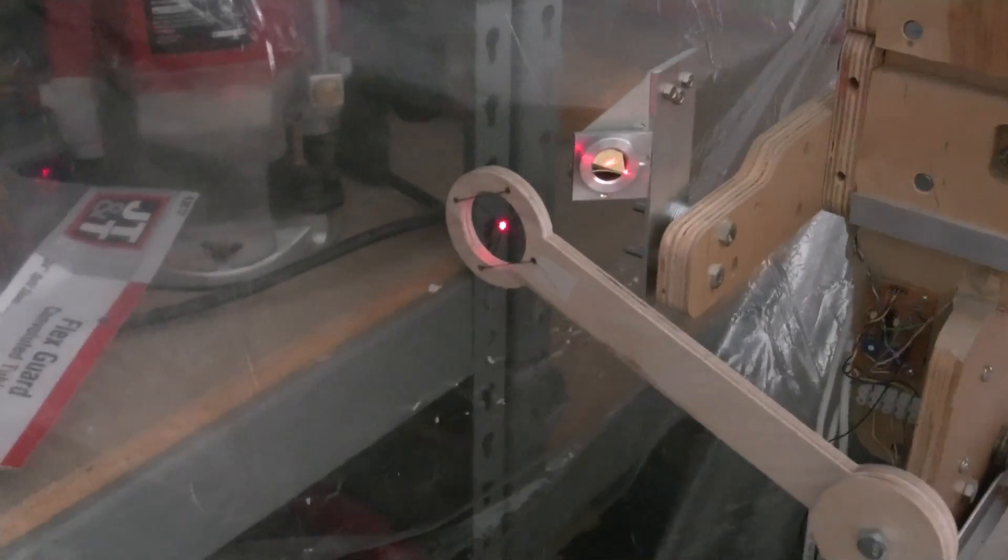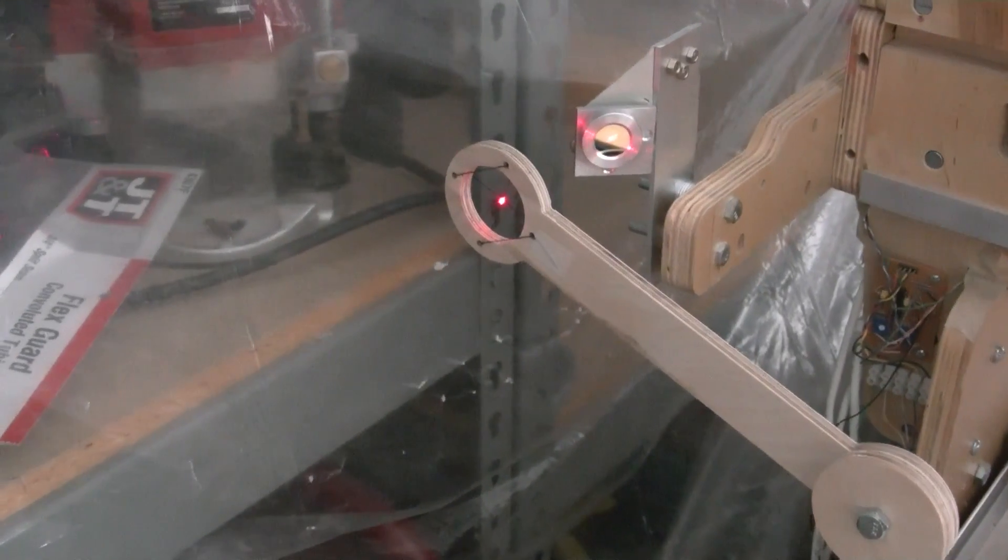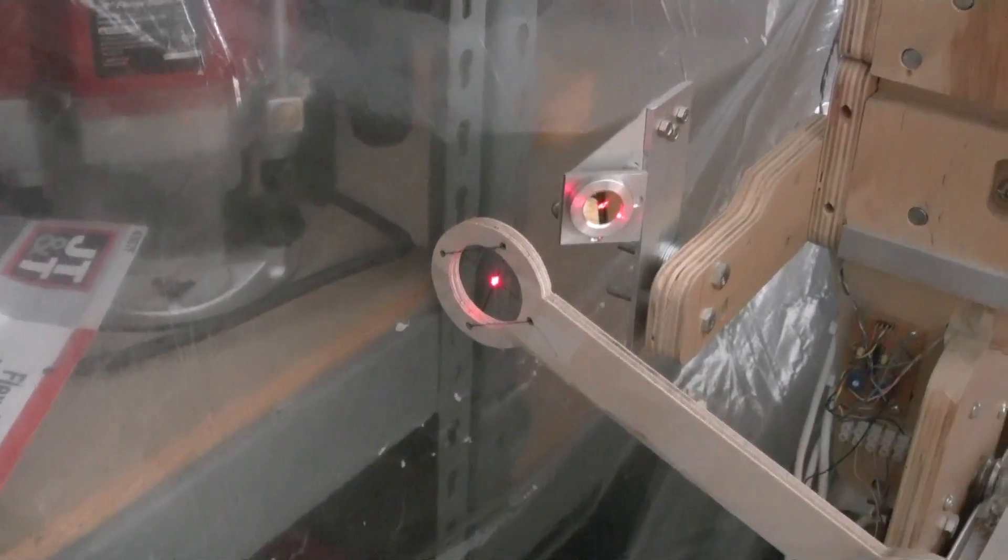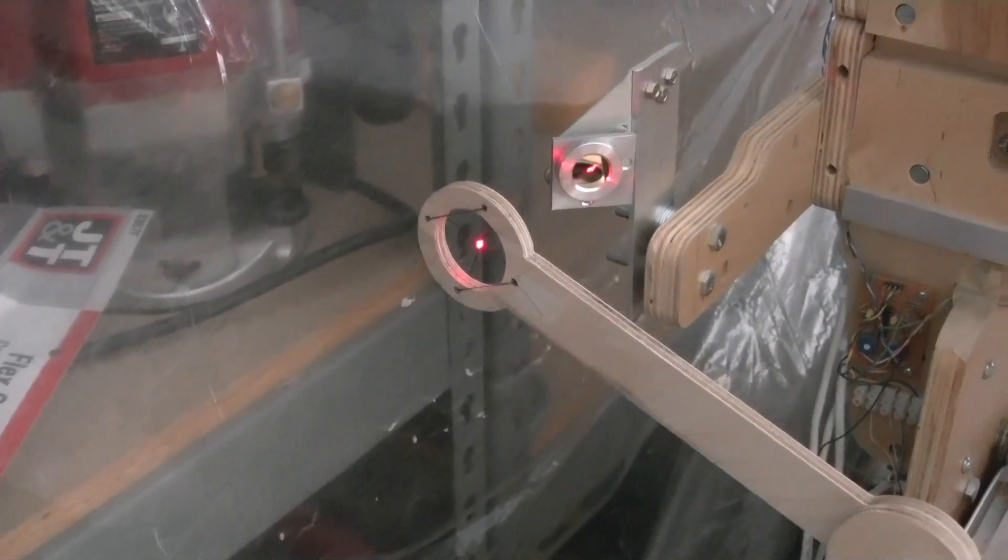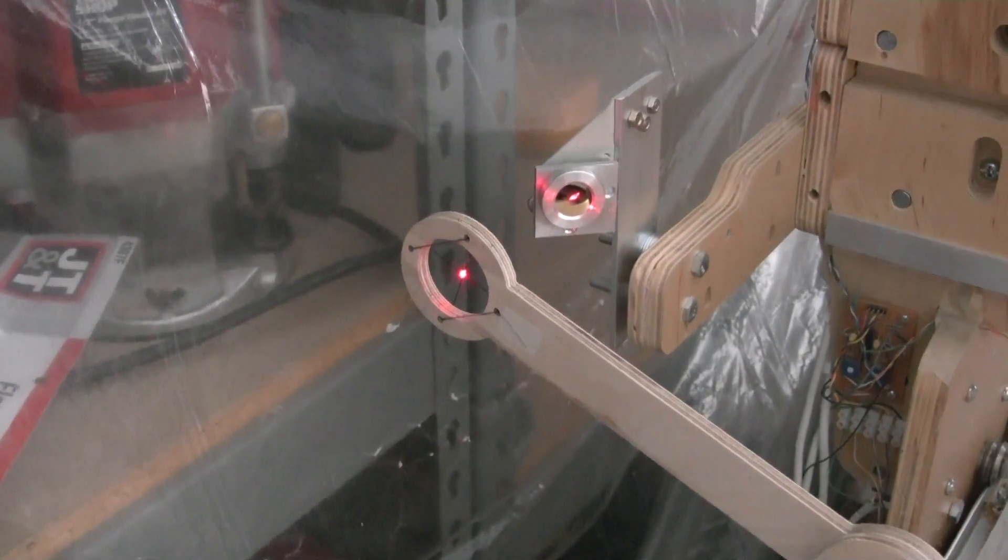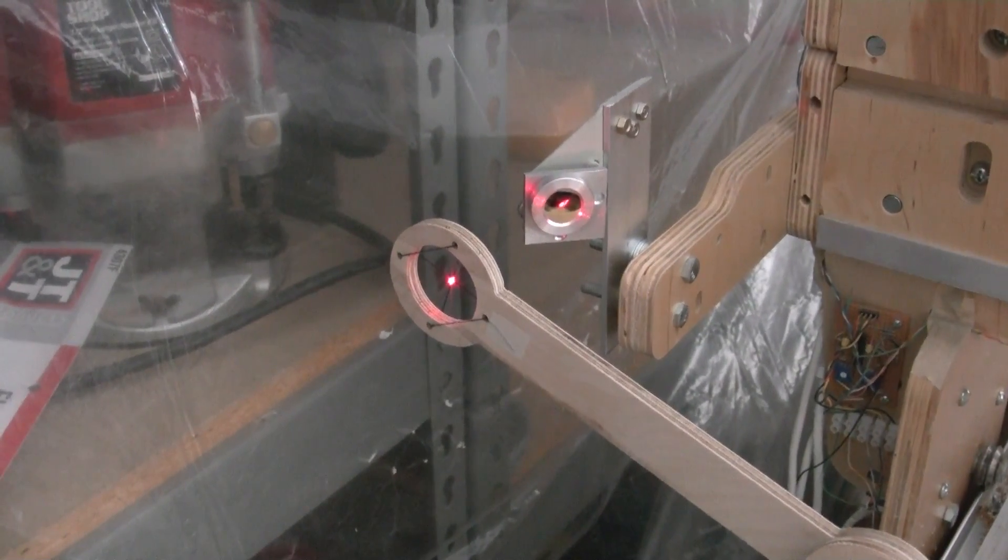You can see that in the far field position, closer to the mirror, it's still hitting the crosshair. That's exactly where you want it to be because you want the beam to travel parallel to the direction of travel of the gantry.